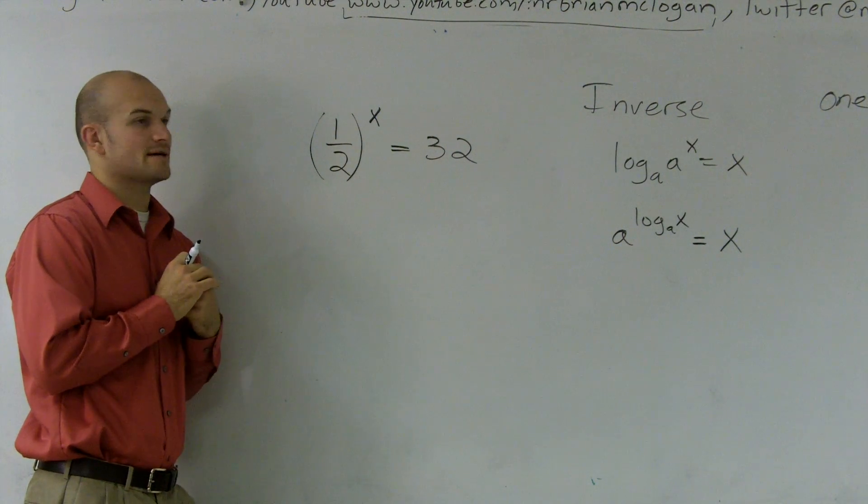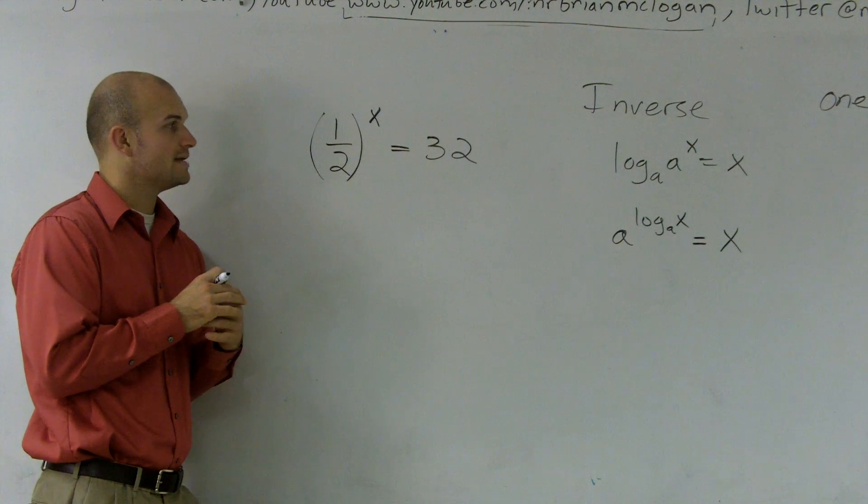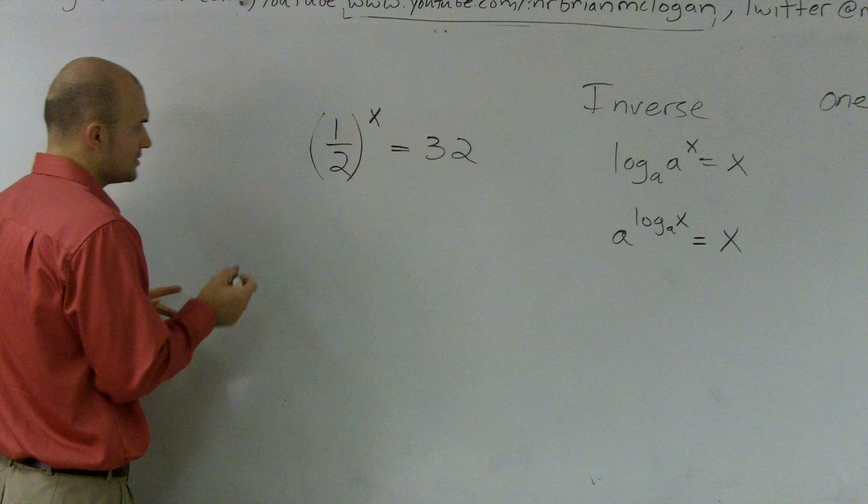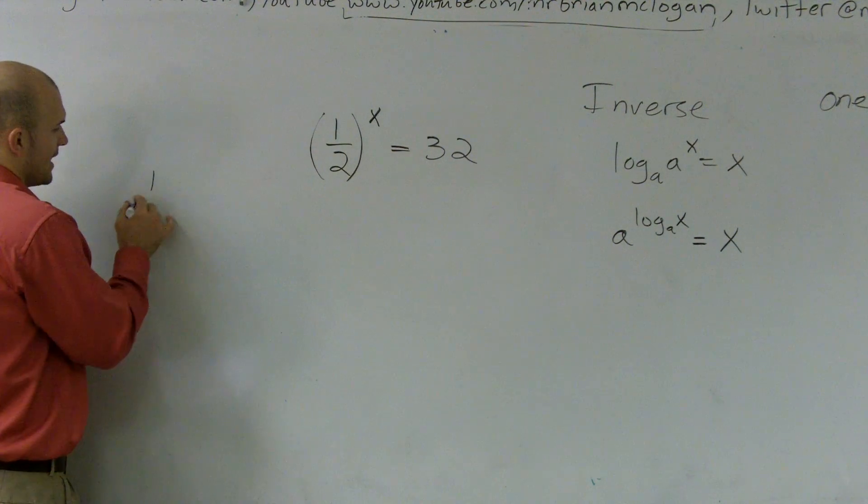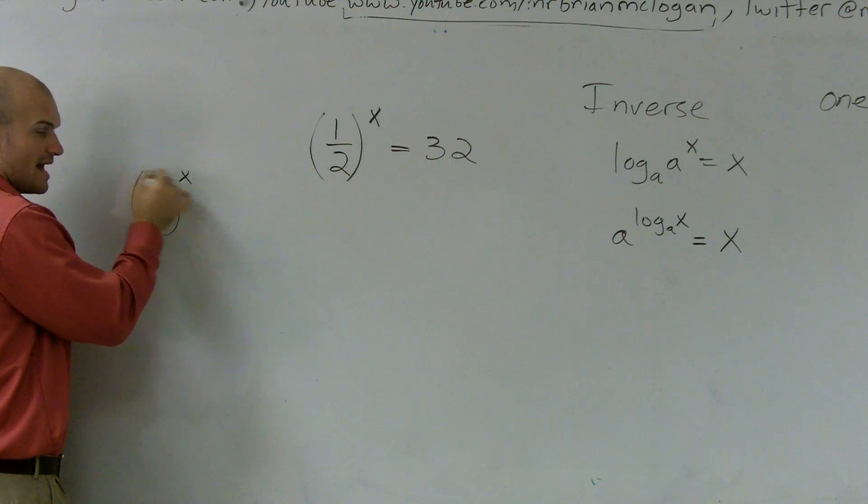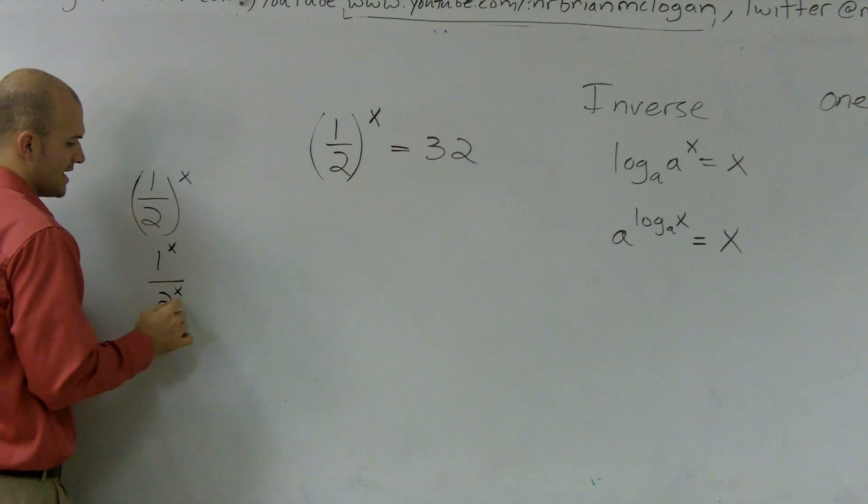So what I want to do is say, how can I rewrite this without using a fraction? I'll just do a little sidebar. I can rewrite (1/2)^x as I can distribute this x to both of them. So it would be 1^x over 2^x, right?